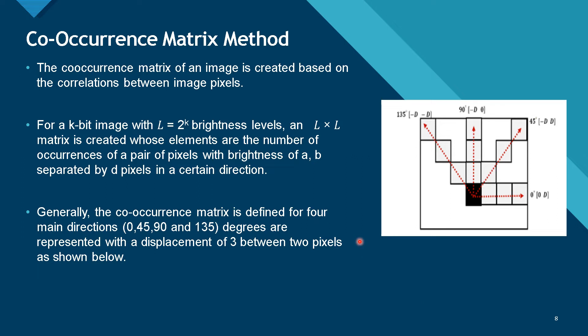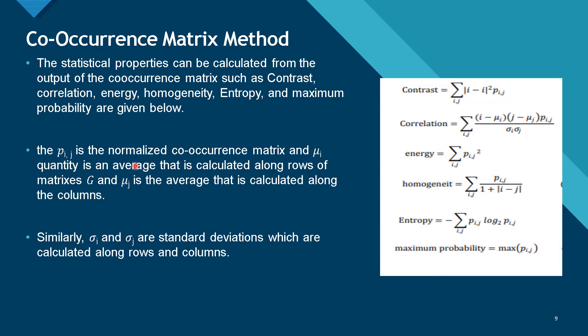The matrix is actually defined for four main directions: one is for 0 degrees, 45 degrees, 90 degrees, and 135 degrees. And it will represent the displacements, for example, displacements like 1 unit, 3 unit, 2 unit between 2 pixels. The co-occurrence matrix method, we can use this method to find the properties of image like contrast, correlation, energy, homogeneity, entropy, and maximum probability, as given below.